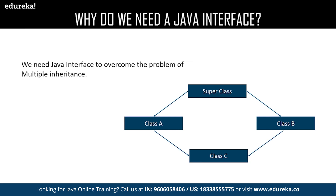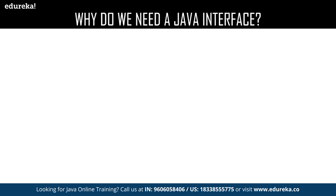The question is: is it seriously impossible to do it? That's when the interface comes into the picture. Using an interface, we can achieve multiple inheritance — inheriting one class and implementing the behavior of another class. Let me explain with a little example.